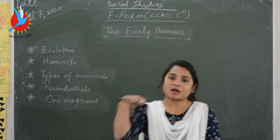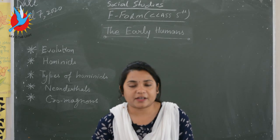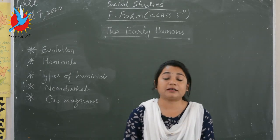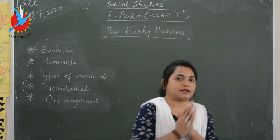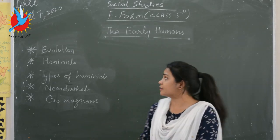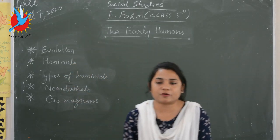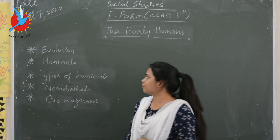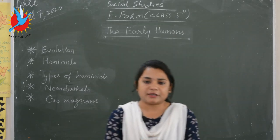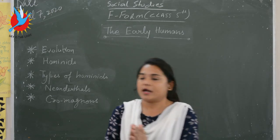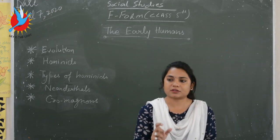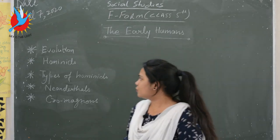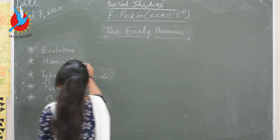Our ancestors were very different from us, and this difference occurred due to environmental and climatic changes at that time. This difference is known as evolution — the evolution of humans. In historical terms, we use the word 'prehistoric men' instead of ancestors. The prehistoric men are known as hominids.